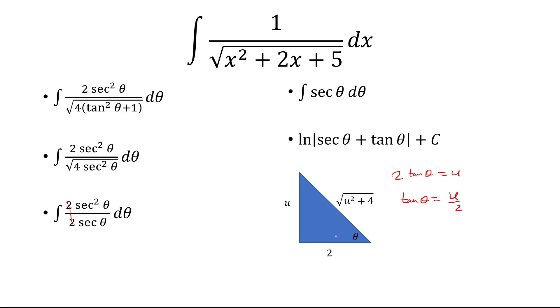So secant is hypotenuse over adjacent. So that's square root of u squared plus 4 over 2. Tangent is opposite over adjacent. That's u over 2. So we'll plug that in.